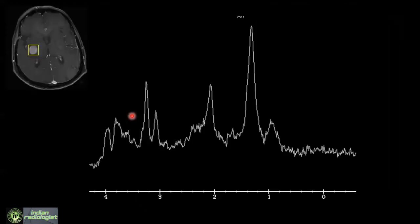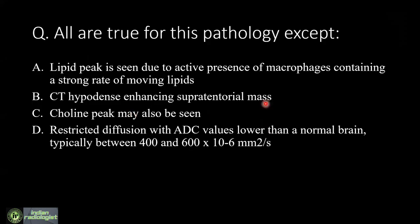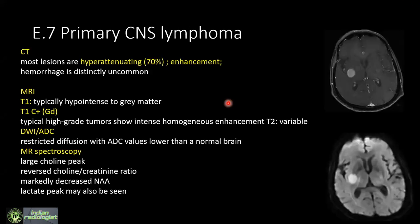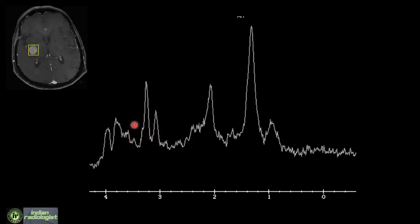34 percent feel this is answer C and 32 percent are towards option B. The diagnosis is primary CNS lymphoma — a homogeneously enhancing lesion showing restricted diffusion and a tall choline peak. On spectroscopy, creatinine is at 3.02 ppm and choline is at 3.22 ppm; the choline peak is above creatinine — a reversal of the normal hunter's angle indicating elevated choline.